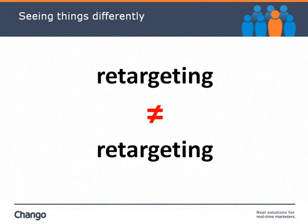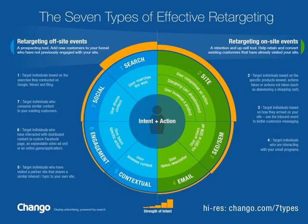Marketers generally hear the word retargeting and think it means people who have been to their site and left. That is a type of retargeting, but we want to help you expand that thinking. Our infographic at chango.com/seventypes is divided in two. On the right-hand side we're talking about retargeting individuals who have been to a given marketer's site — this is what you're familiar with. As a consumer, you've probably noticed retailers taking over your entire digital browsing experience trying to squeeze those last few Christmas dollars out of you. Site retargeting is the largest of the spends within the retargeting world.